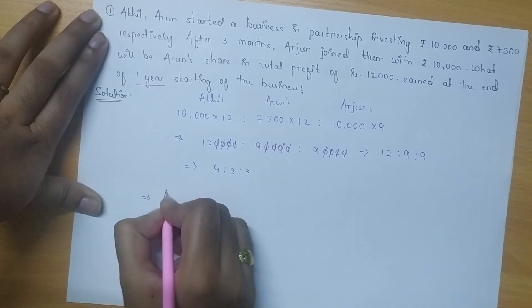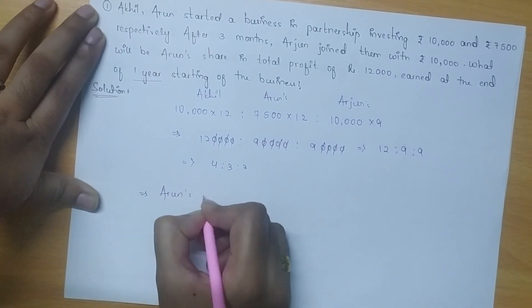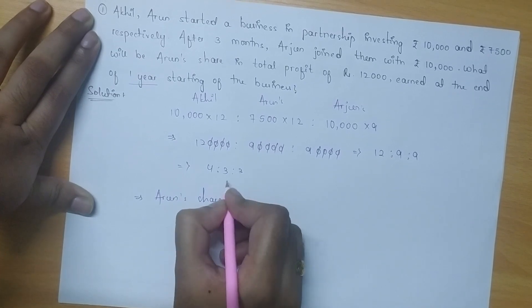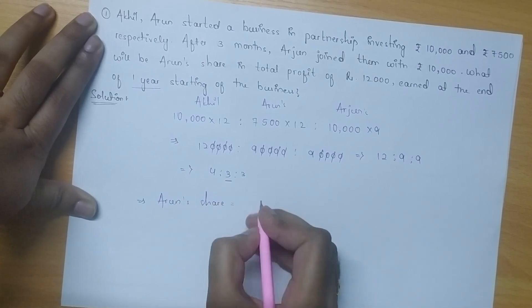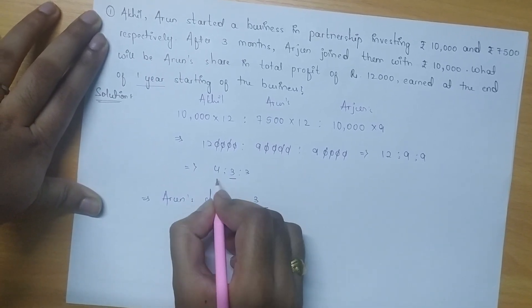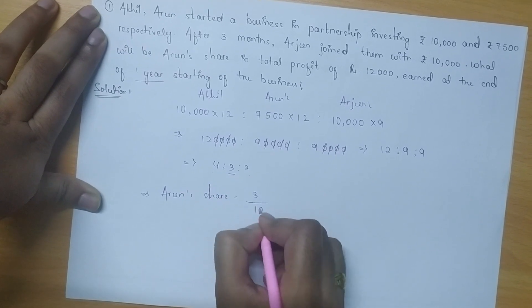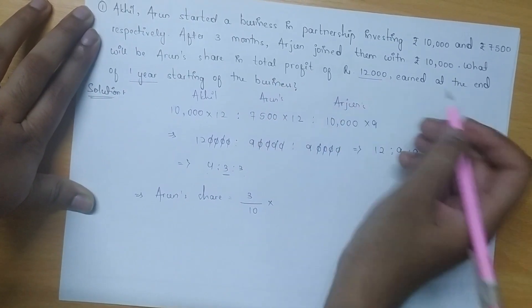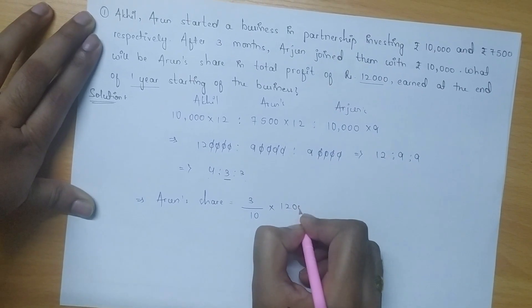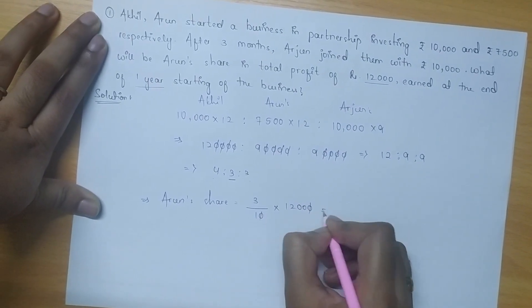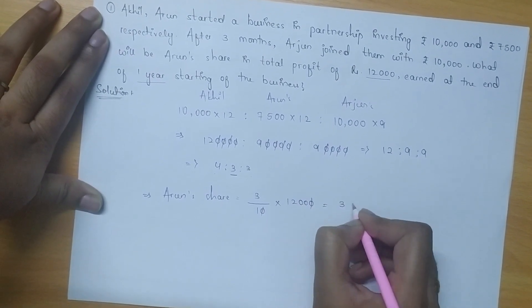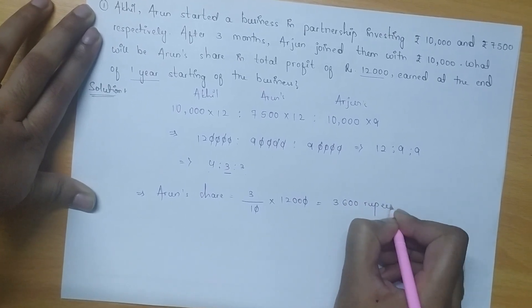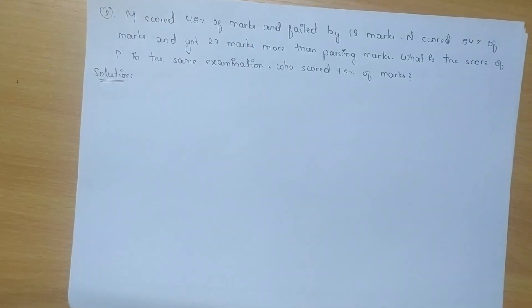Therefore, according to the question, Arjun's share will be — as we can see Arjun's share is in the ratio of 3. So, 3 divided by the sum of 4, 3 and 3 (which is 10), multiplied by the total profit of rupees 12,000. On cancellation and reducing we get 3,600 rupees as Arjun's share.